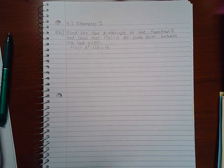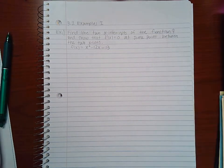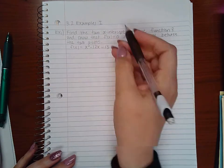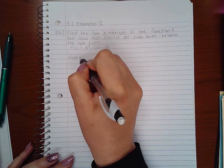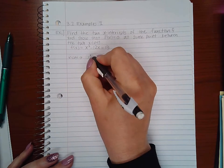This is 3.2 Examples Part 1. It says find the two x-intercepts of the function f and show that f prime of x equals zero at some point between the two points. So first thing we need to do is find the x-intercepts. To do that we have to set the function equal to zero.